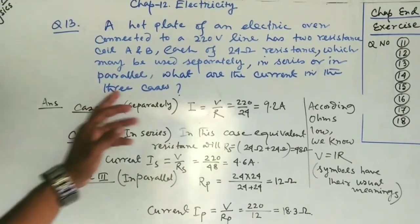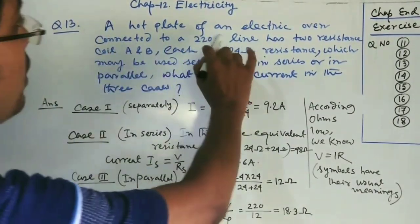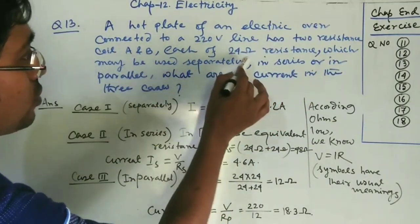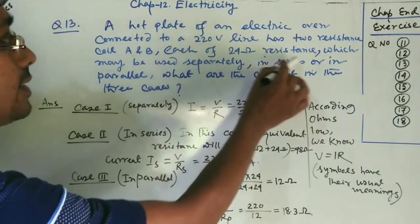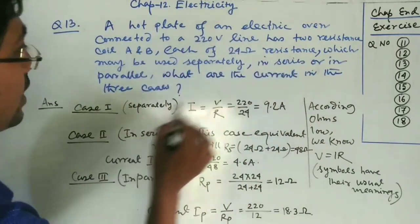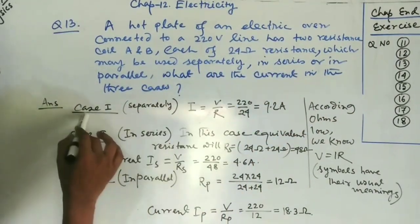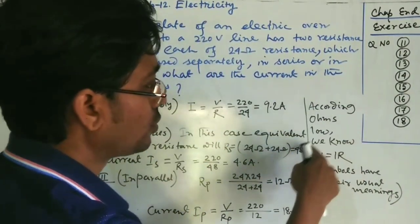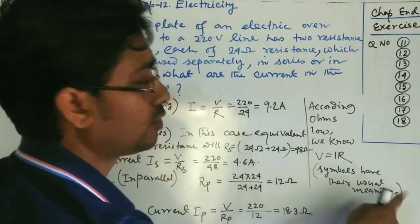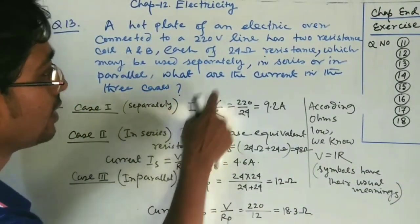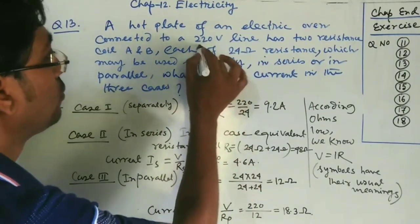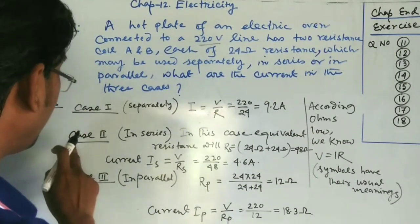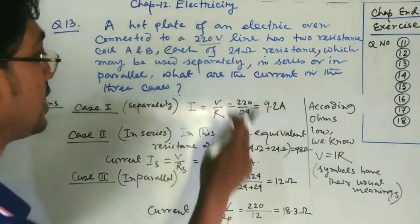Question 13: A hot plate of an electric oven connected to a 220-volt line has two resistance coils A and B, each of resistance 24 ohm, which may be used separately, in series, or in parallel. We need to find the current in all three cases. For a single coil, using V = IR: I = V/R = 220/24 = 9.2 ampere.